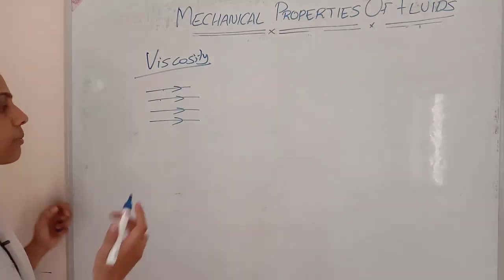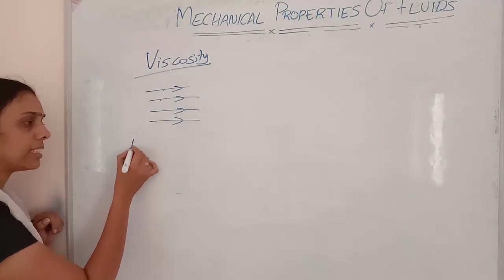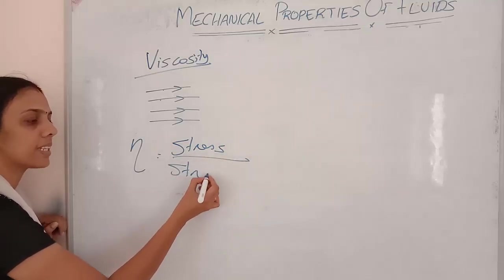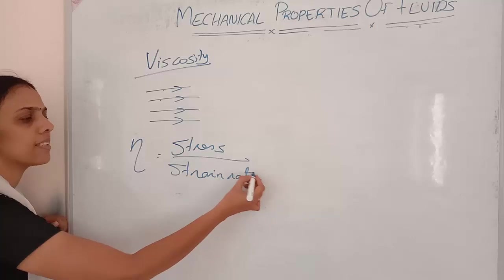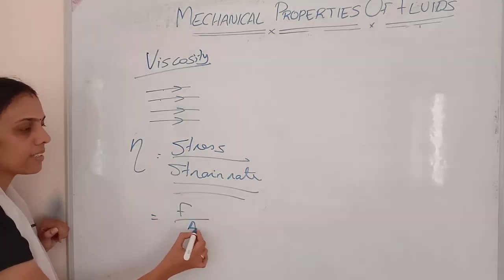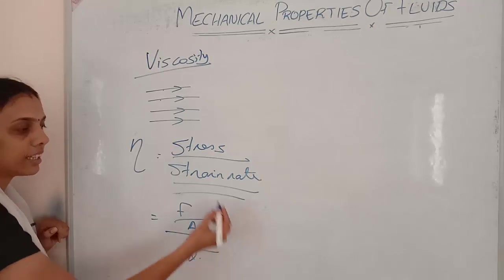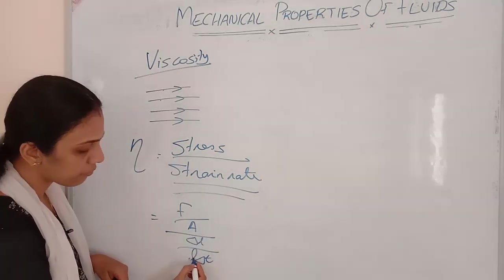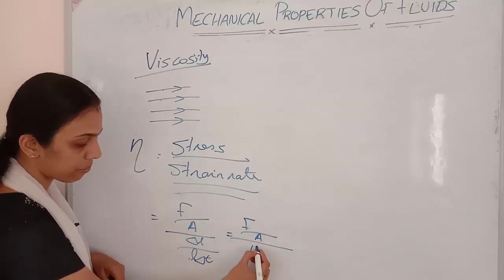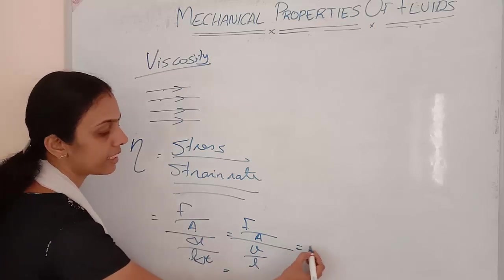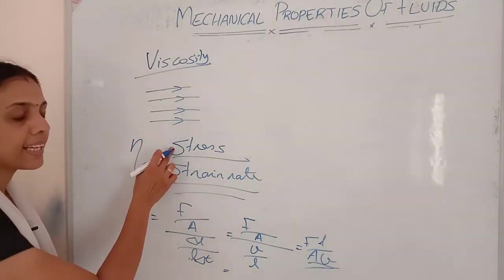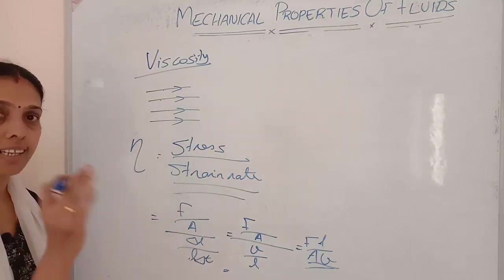Mathematically, viscosity eta is equal to the ratio of stress to strain rate. Stress is force by area; strain rate is change in length divided by original length, divided by time (delta l / delta t = v). So the formula becomes: eta = F·L / (A·v).